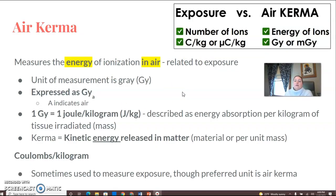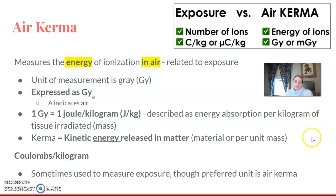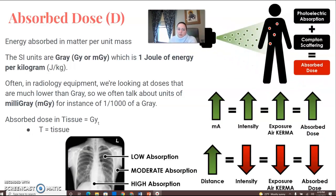Air kerma measures the energy of ionizations in air — it is related to exposure, but where exposure is the number of ionizations, air kerma is the energy. The unit of measurement is the gray, expressed as Gy, with a subscript 'a' indicating air. One gray equals one joule per kilogram, described as energy absorption per kilogram of mass. Kerma stands for Kinetic Energy Released in Matter. Coulombs per kilogram is sometimes used to measure exposure, though its preferred unit is air kerma.